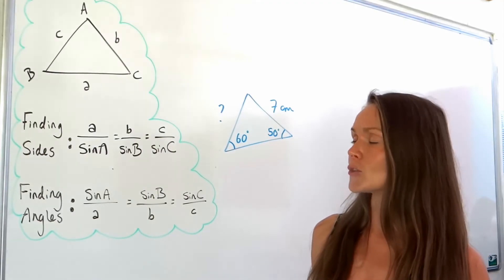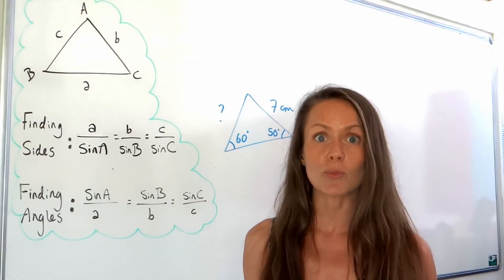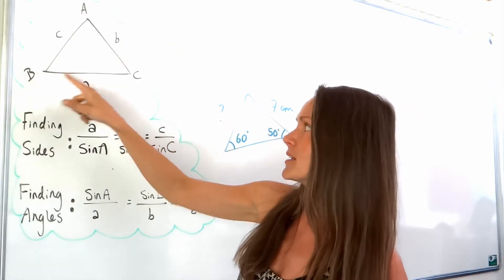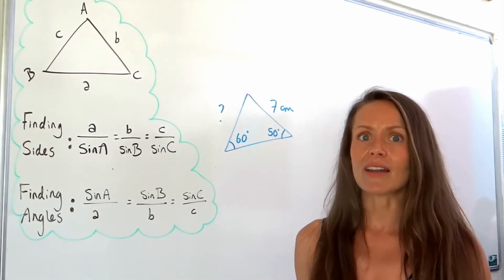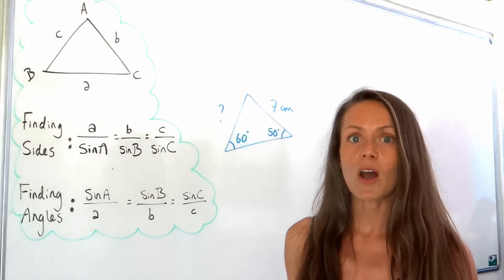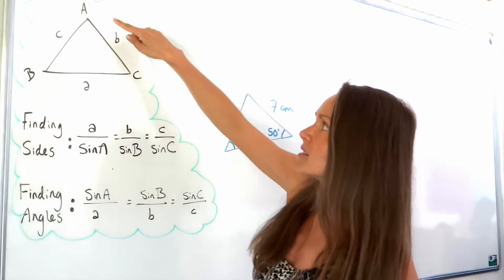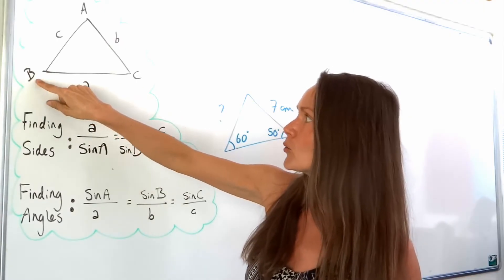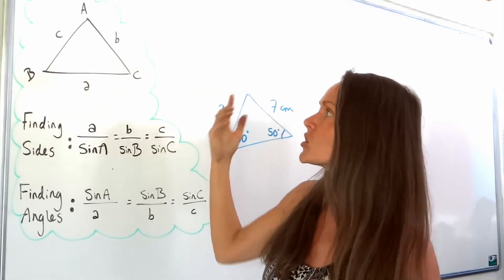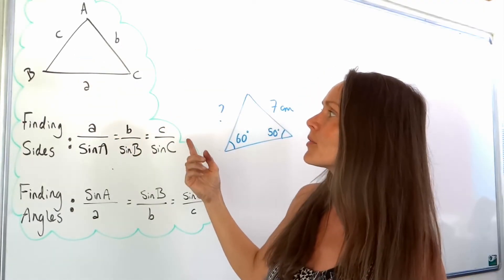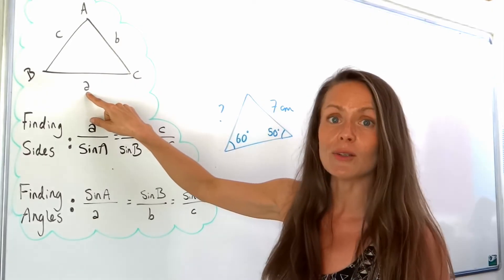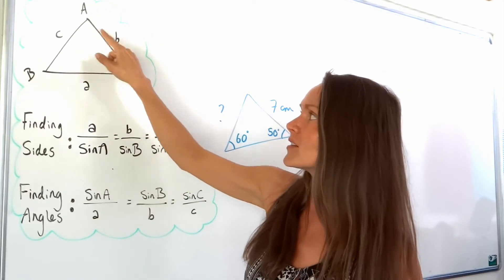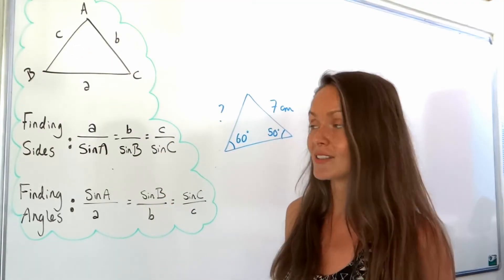The first thing you need to do is to label the angles with capital letters. I've chosen A, B and C. The sides that are opposite those angles use the same letters. So if this is angle A, this must be side A, and this is angle B, so this is side B. Remember to use lowercase when you label the sides — angles are capital letters and sides are lowercase.